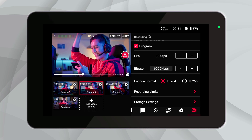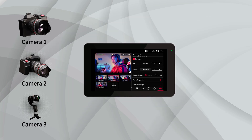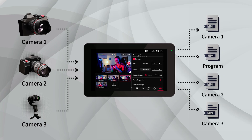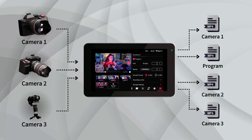When compared to traditional recording, ISO recording shines with several advantages. It allows for the customization of your program in post-production, providing additional content that can be repurposed and repackaged. During a live video recording, ISO recording enables camera switching, serving as a backup in case of camera failure. Whether you are a professional filmmaker or a casual content creator, ISO recording opens up new possibilities for your creative endeavors.